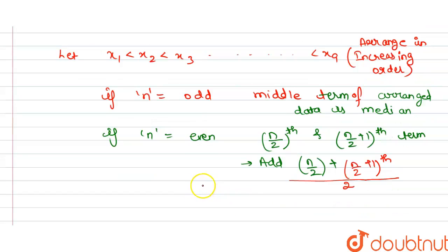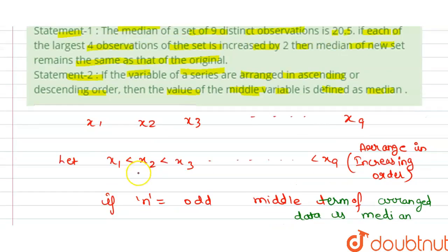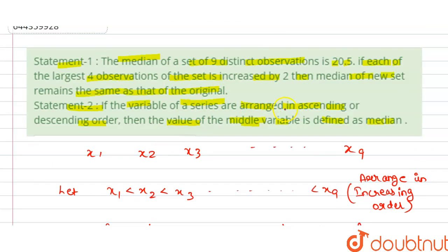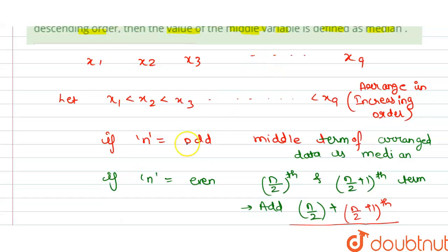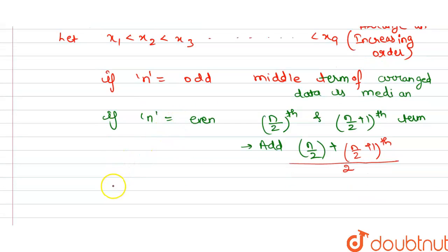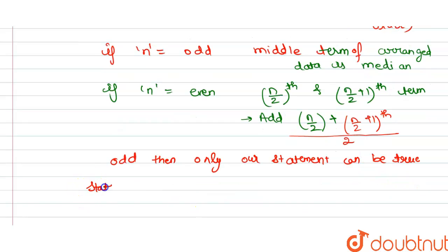In our Statement 2, it is not given that the arranged data is odd or even, so we cannot say anything about this. If it is mentioned, then only Statement 2 can be true, but here it is not mentioned, so Statement 2 is incorrect. Statement 2 is false.